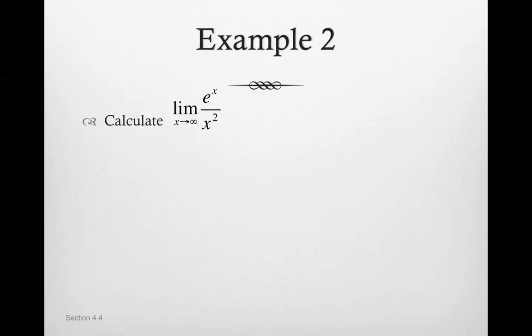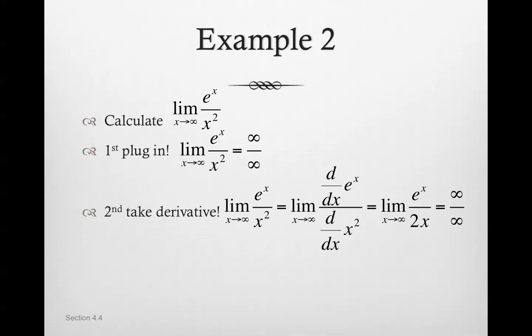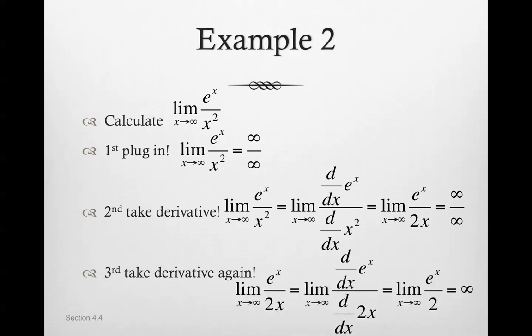Calculate the limit of e^x / x² as x approaches infinity. Plugging in: e^x approaches infinity and x² also approaches infinity, so we have ∞/∞, which is indeterminate. Applying L'Hopital's rule and taking derivatives gives e^x / 2x — still ∞/∞. We continue and apply L'Hopital's rule again, taking another derivative, and we get e^x / 2, which approaches infinity. So the limit as x approaches infinity of e^x / x² is infinity.